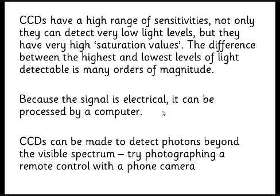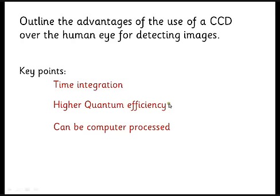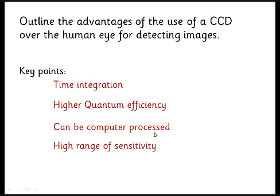CCDs can also go way beyond the visible spectrum. A simple example is pointing your mobile phone camera at a remote control — you can actually see the infrared radiation as visible light through the camera. To summarize the advantages: firstly, time integration — true for photography and CCDs — you can collect all the total light over a long time. Secondly, a higher quantum efficiency, going from one or two percent up to about 70 or 80 percent. Thirdly, you can put the image straight into a computer. Fourthly, you have a much bigger range of sensitivity, able to see very bright things and still spot dim things next to them. And finally, you can detect radiation outside the visible part of the spectrum.